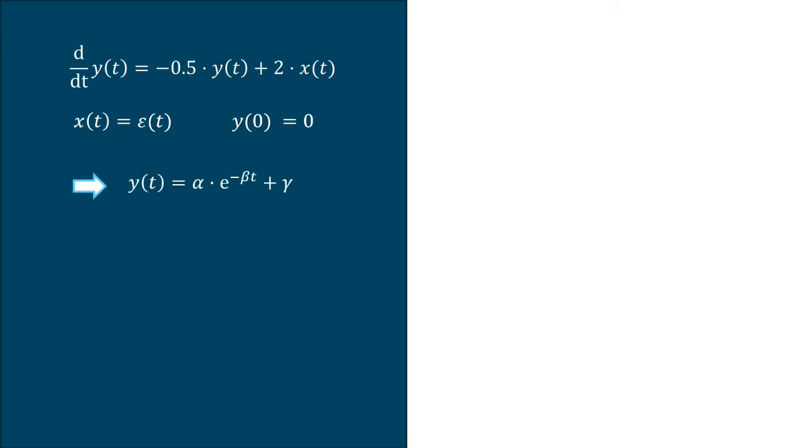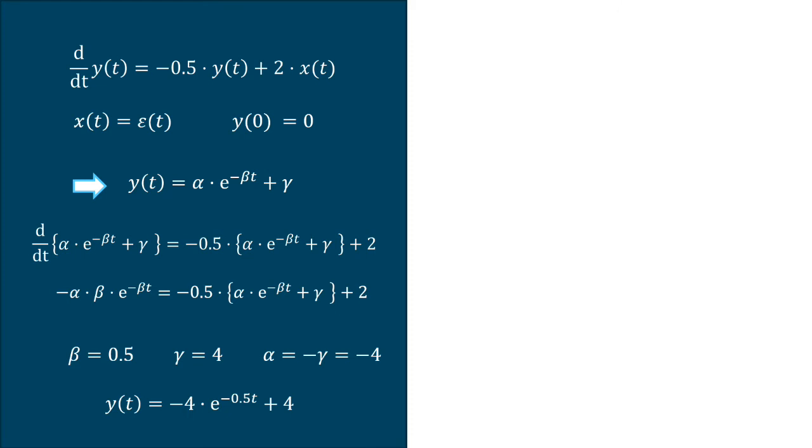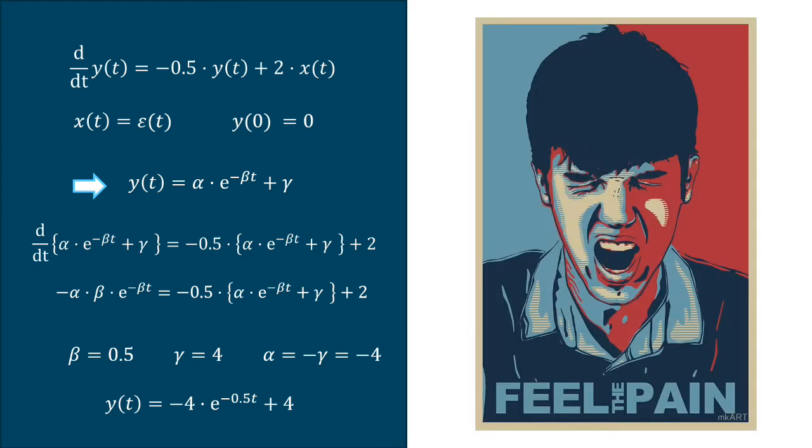So, the solution goes like this. First, you propose the structure of a solution and because the derivative of the exponential function is also an exponential function, this is the natural candidate. Then, you replace the solution on the differential equation on top and compute the derivative on the left to find the parameters that verify the equation. Finally, you have your solution. Easy, right? And this was just first order and completely useless to our goal. We want to extract dynamic characteristics, not to simulate the system.